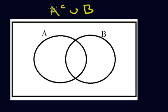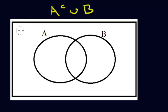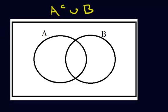Let's get started with this example. We are trying to shade A complement union B. There are two ways to do it. I'm going to show you the normal way that people do it in class, and then we'll go over another way that I like to do it. I'm using a drawing program, which means I can color a lot easier than you could with a pencil, but you'll get the idea.